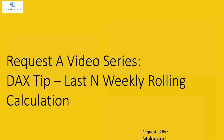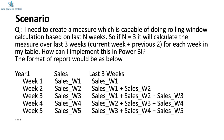Let's first have a look at the scenario. The user needs to create a measure capable of doing a rolling window calculation based on last N weeks. So if N equals 3, it will calculate the measure over the last 3 weeks, meaning the current week plus the previous two weeks. The format of the report has year as the first column and week as the second level — so it's a hierarchy — with week 1, week 2, week 3, etc., showing sales as well as the last 3-week sales side by side.